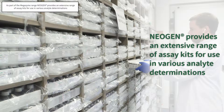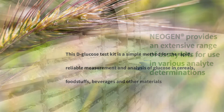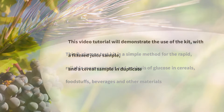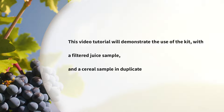As part of the Megazyme product range, Neogen provides an extensive range of assay kits for use in various analyte determinations. This D-glucose test kit is a simple method for the rapid, reliable measurement and analysis of glucose in cereals, foodstuffs, beverages and other materials. This video tutorial will demonstrate the use of the kit with a filtered juice sample and a cereal sample in duplicate.